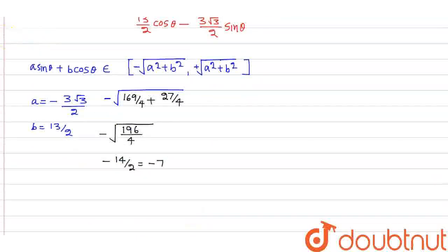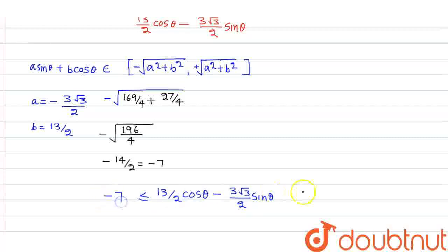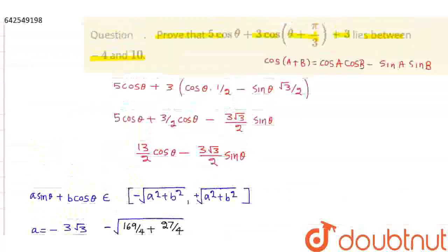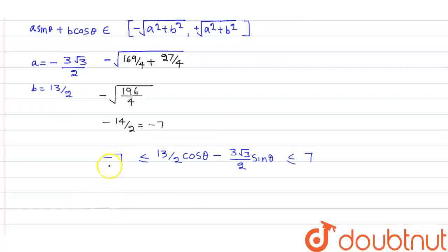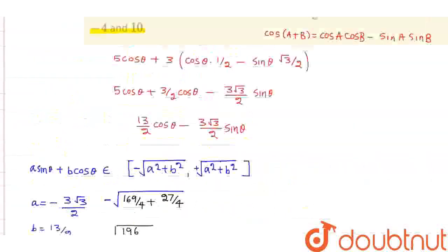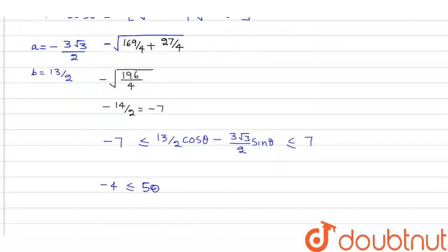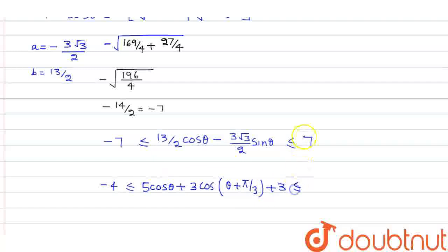So our function (13/2)cosθ − (3√3/2)sinθ goes from −7 to +7. Now we need to add 3. So 5cosθ + 3cos(θ + π/3) + 3 goes from −7 + 3 = −4 to 7 + 3 = 10. This is what we needed to prove. Hence proved: the expression lies between −4 and 10.